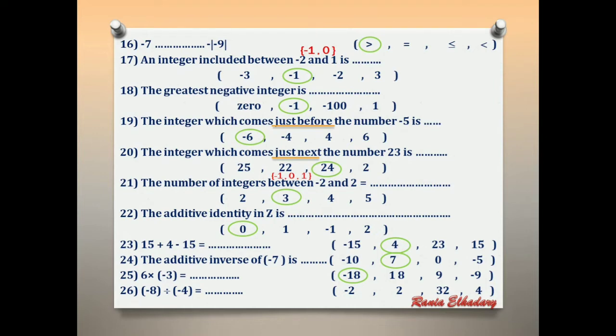Number 26: negative 8 divided by negative 4. Negative divided by negative — cancel the negatives. 8 divided by 4 equals 2.